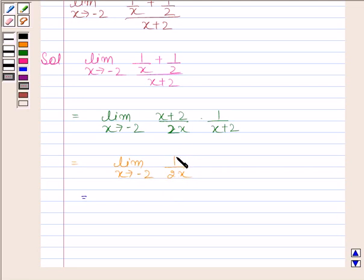So, limit of 1 by 2x as x tends to minus 2 is minus 1 by 4. Hence, our required answer is minus 1 by 4.